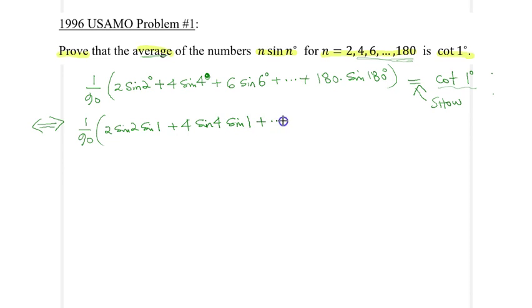And finally, the last term would be 180 times sine 180 times sine 1, and that whole thing now should better be equal to cotangent 1 times sine 1, which is simply cosine 1, right? So that's exactly what I want to show.